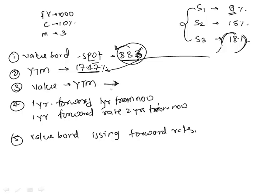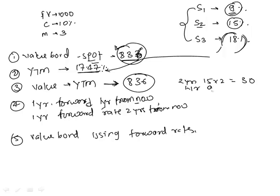Question 3 — value using YTM: with PMT = 100, FV = 1000, N = 3, IY = 17.47% → PV = 836, confirming consistency. Question 4 — calculate 1-year forward rate 1 year from now using the shortcut approximation: investing for 2 years earns 15% × 2 = 30%; investing for 1 year earns 9% × 1 = 9%; so the forward rate needed for the second year ≈ 30 − 9 = 21%. The exact formula: 1.15² / 1.09 − 1 = 21.33%.